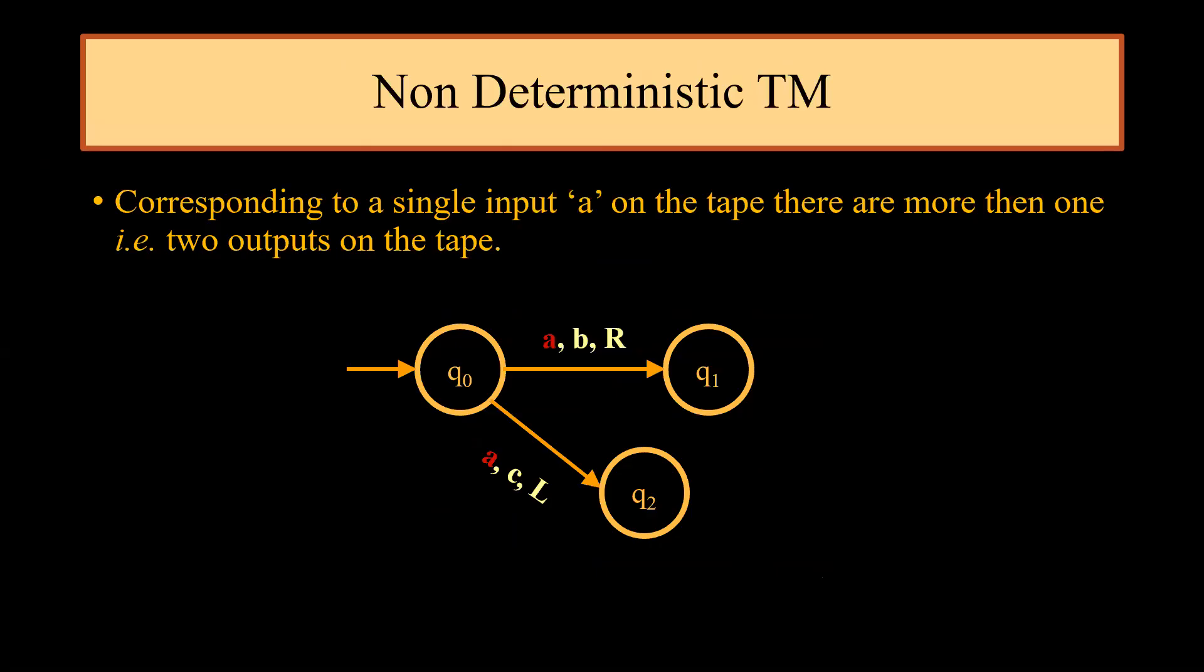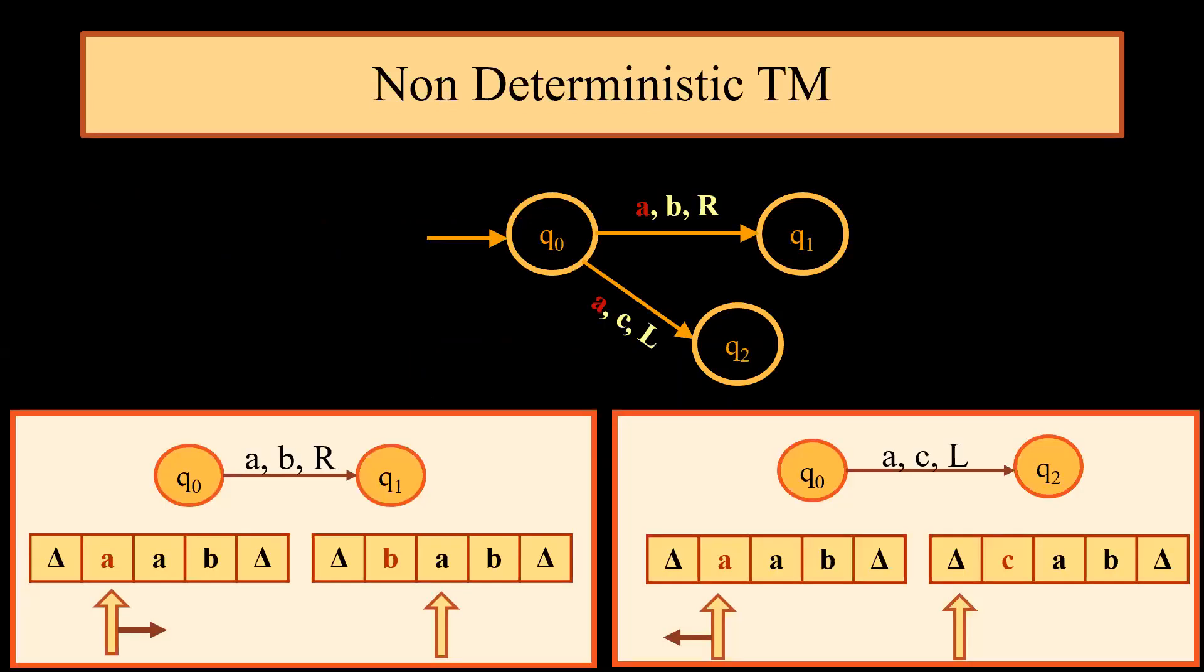Last is the non-deterministic Turing machine. A non-deterministic Turing machine corresponding to single input we have more than one output. Here we have input symbol A. We move to Q1 on reading A and writing B and we move one cell right. On the other hand, we move to Q2 state by A, C, L, that means read A, write C, and move one step left. This is non-deterministic Turing machine. The movement of non-deterministic Turing machine is shown in this diagram: A, B, R Q0 to Q1 and A, C, L Q0 to Q2.